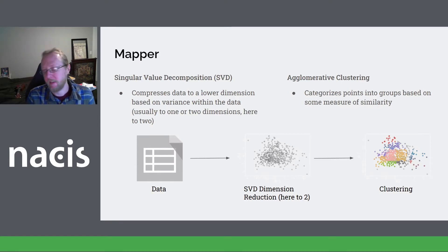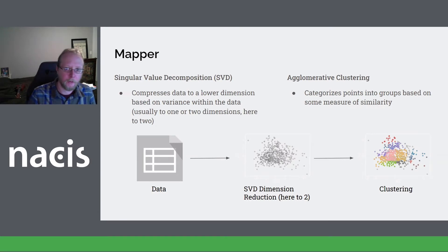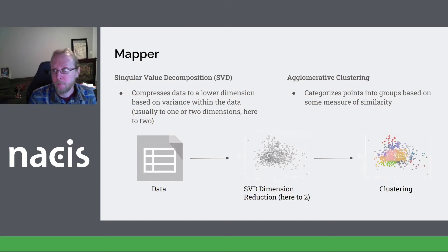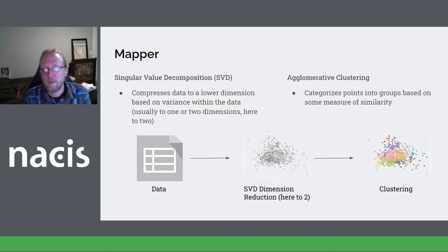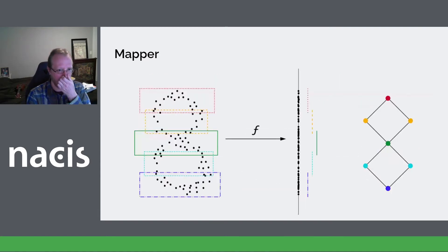This is why, as we'll see later, specific data points may belong to more than one cluster — something that accounts for both Mapper's strength in detecting similarities within messy data that other algorithms might not, and also its difficulty when you're trying to place it on a Euclidean map. A more mathematical representation of the process might look like this.